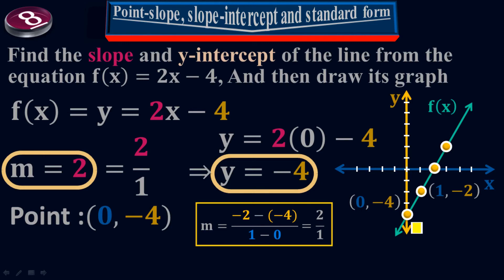You can calculate the slope of the line using either the rise-over-run technique or the coordinate formula — both give the same result.